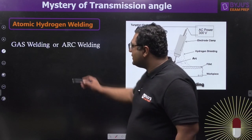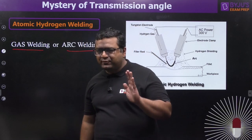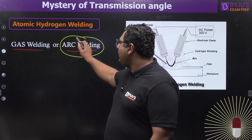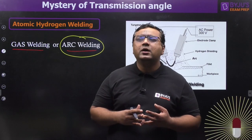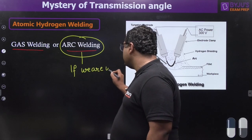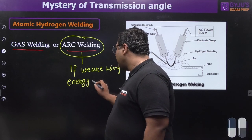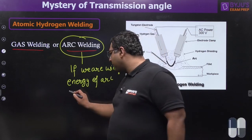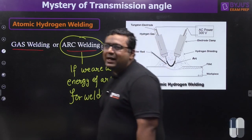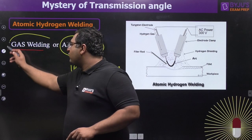To understand whether atomic hydrogen welding is gas welding or arc welding, we must be clear about the principle of both. In short, we call a welding process arc welding if the energy required for welding comes from an arc. If we are using the energy of arc for welding purposes, it comes under the category of arc welding.